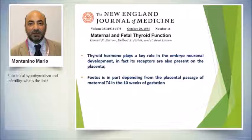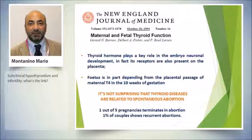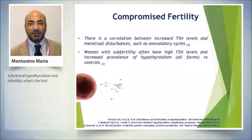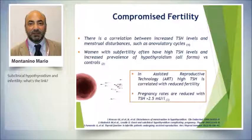The fetus is dependent on placental passage of T4, particularly from 10 weeks gestation. It is therefore not surprising that thyroid disease is related to spontaneous abortion, which affects almost 20% of pregnancies — one in five. We know there is compromised fertility due to a correlation between increased TSH and anovulatory cycles. Women with subfertility very often have high TSH, and even in IVF procedures, high TSH can compromise the outcome.